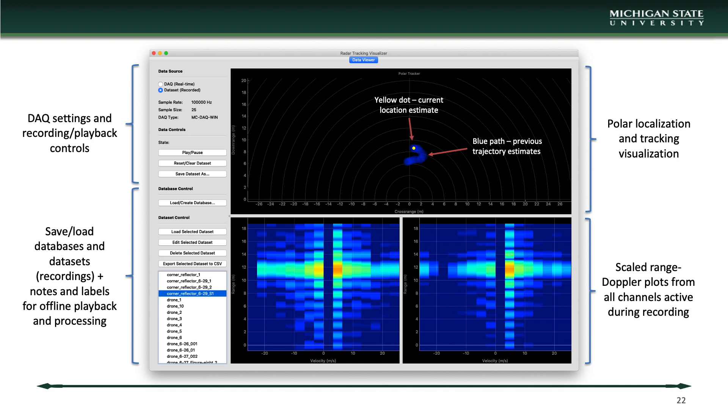Here, the main dashboard for the tracking visualization and data acquisition can be seen. On the left, the recording controls and DAC information are displayed, followed by the controls for saving and playing back pre-recorded data. On the right, a polar tracking plot displaying the estimated location of the drone in yellow and the estimated trajectory of the drone in blue can be seen. Below the polar plot are the range doppler maps created from the two active receivers. The zero doppler column is removed to eliminate clutter while searching for the drone.